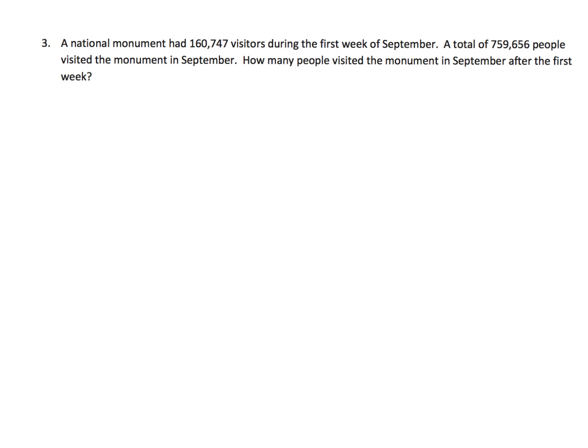So here's a little bit of practice drawing tape diagrams. I'm not going to show the mathematics afterwards because I think the key part for these problems is just learning how to draw and use a tape diagram. It says a national monument had 160,747 visitors during the first week of September. A total of 759,656 people visited the monument in September. How many people visited the monument after the first week of September?